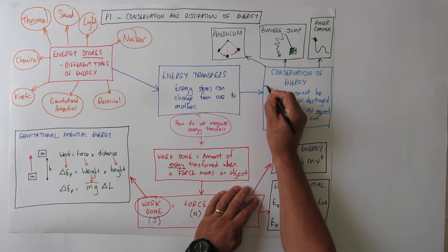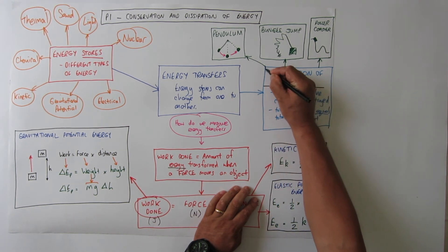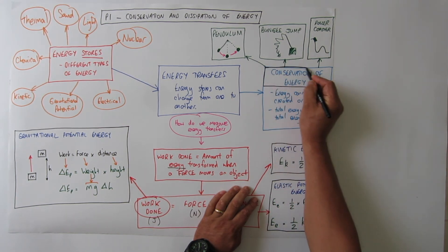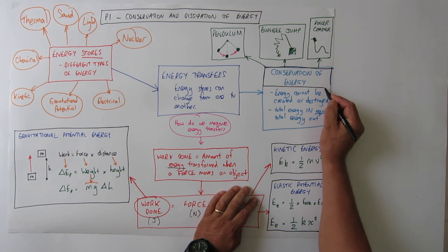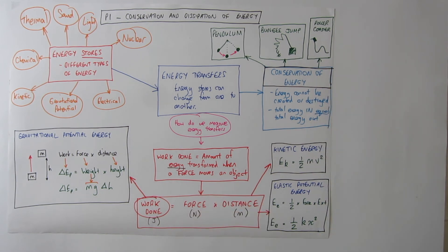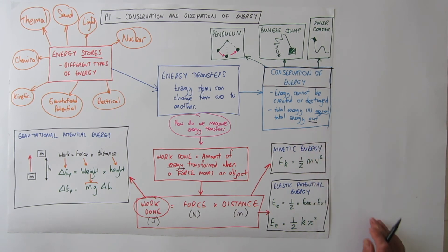Now let's go back and look at the principle of conservation of energy. Which remember is that energy cannot be created or destroyed. Basically the total energy of a system remains constant. Or the total energy in is equal to the total energy out.